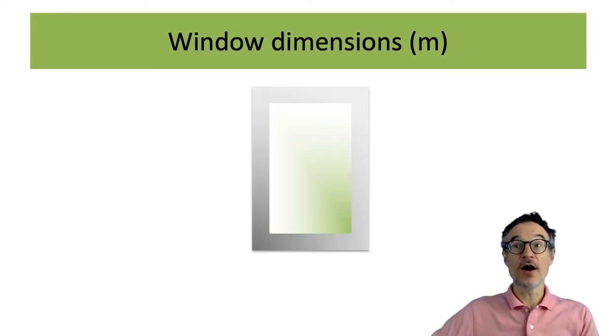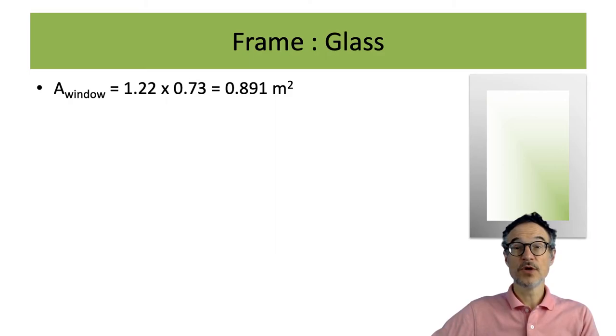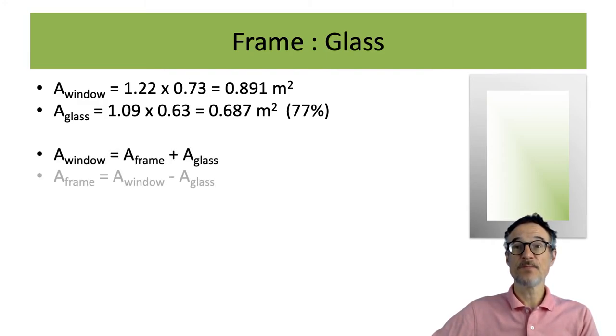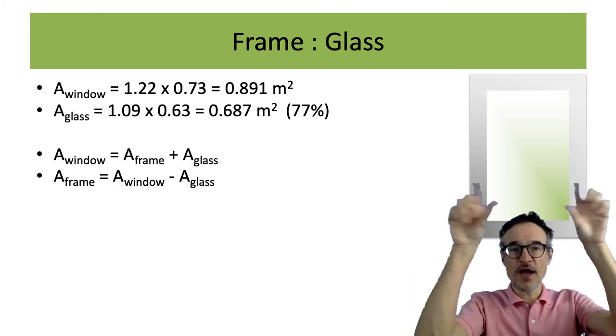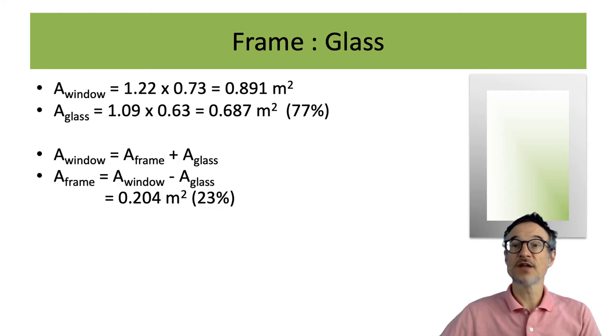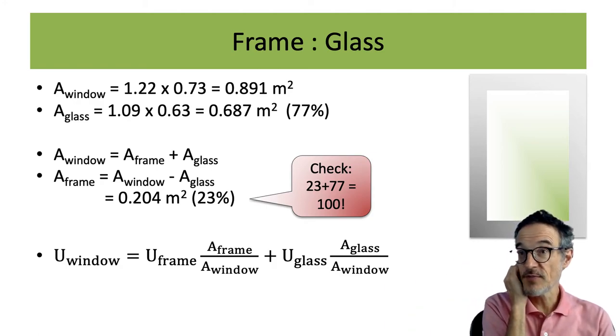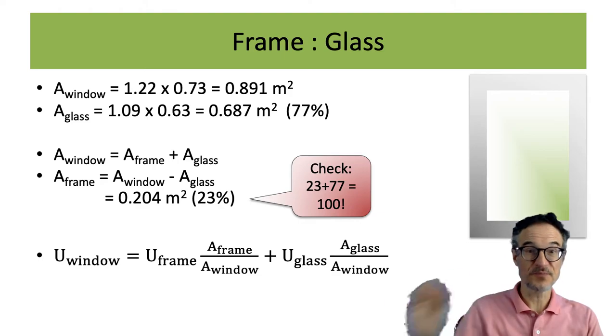So we can then look at the area of the frame and the area of the glass. And we can work out that's the glass area, and the glass is something like 77%. The area of the window is the area of the frame plus the area of the glass. So we can work out the area of the frame is window area minus glass area, which comes to about 23%. So we can do a quick check here that we've got the calculations right: 23 plus 77 is 100. It adds up to 100%, which is always good.